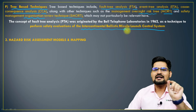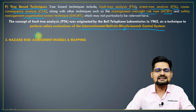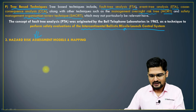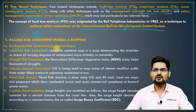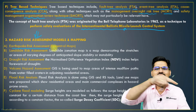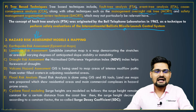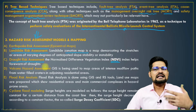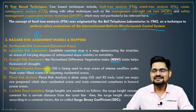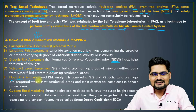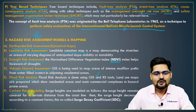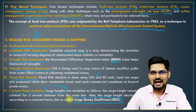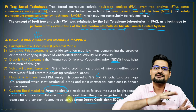The third category is hazard risk assessment models and mapping, especially relevant for those from a geography or geology background. For earthquake risk assessment, epicentral maps and radial maps are created — a radius is drawn around the epicenter to assess risks. For landslide risk assessment, zonation maps are made. Drought risk assessment uses NDVI and other indexes through GIS analysis. Volcano hazard assessment is also GIS-based. Flood risk zonation uses GIS and remote sensing. Cyclone flood modeling takes into account surge heights, and the surge decay coefficient (SDC) is calculated and mapped to determine how far and how quickly the surge will come inland.